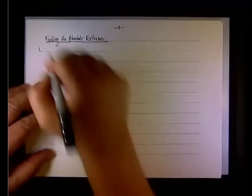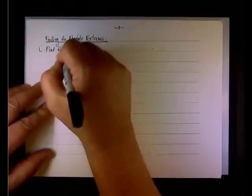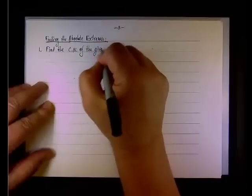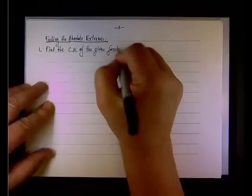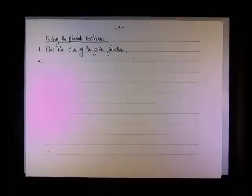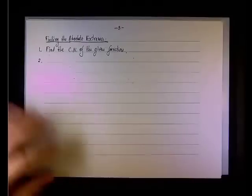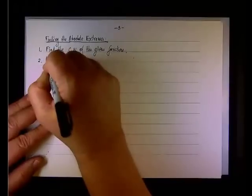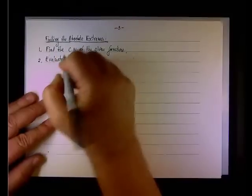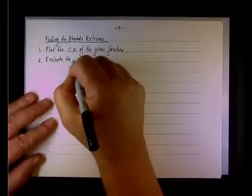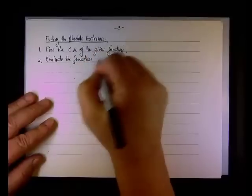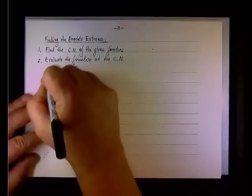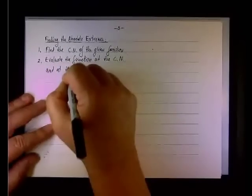The first step, we need to find the critical number of the given function. Step two, we need to evaluate, but we need to evaluate not only the function for the critical value, but also we may have endpoints. So at this point, we evaluate the function at the critical numbers and at the endpoints.